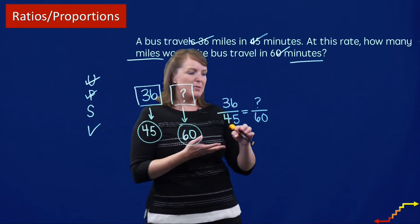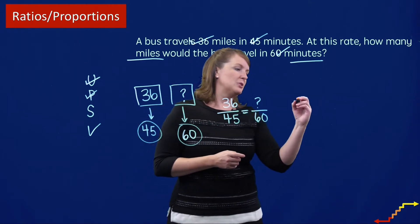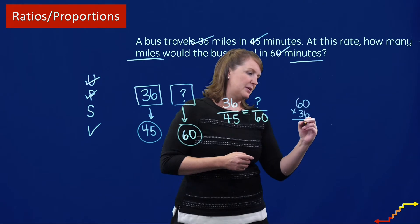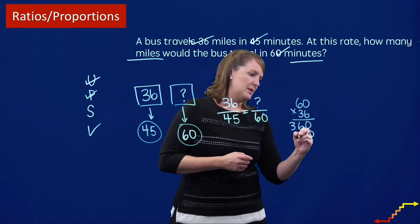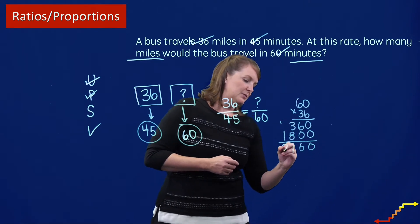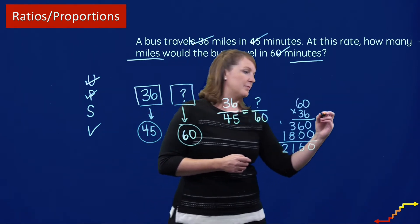Often students will also cross multiply. I'll kind of go that route today so we see what that looks like. So first I'm going to do 60 times 36. So zero and 360. So that is 2160.